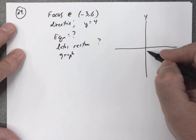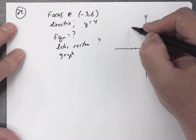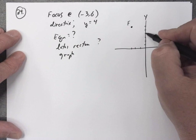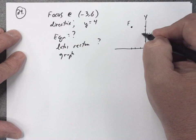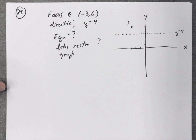So the focus is at (-3, 6). So 1, 2, 3, 4, 5, 6. So there's the focus and of course the focus is what's inside the parabola. And then we're told the directrix is the line y equals 4. y equals 4 is right here. So if I can sketch in a horizontal line.